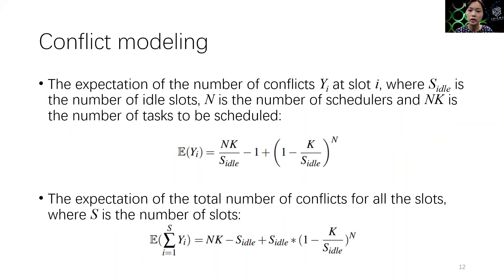We tried to model the conflict by the number of idle slots, number of schedulers, and the number of tasks waiting to be scheduled. The detailed derivations and equations can be found in the paper. However, even under simplified scenarios, it is still hard to derive a mathematical solution. The equation is complicated and it is hard to factor in the impact from repetitive rescheduling since it is a dynamic situation. Therefore, we continue our analysis by a lightweight simulation.